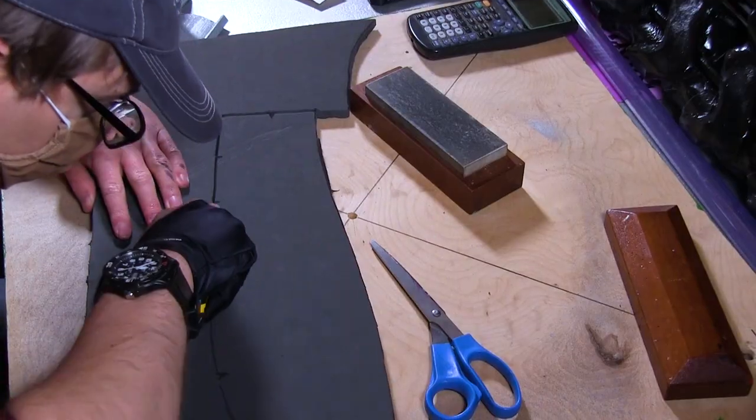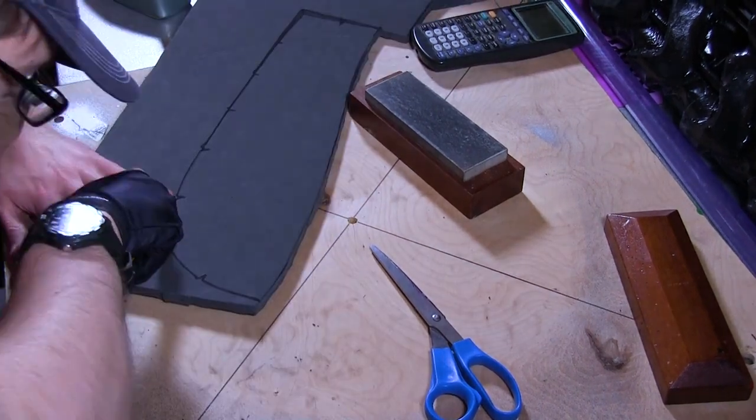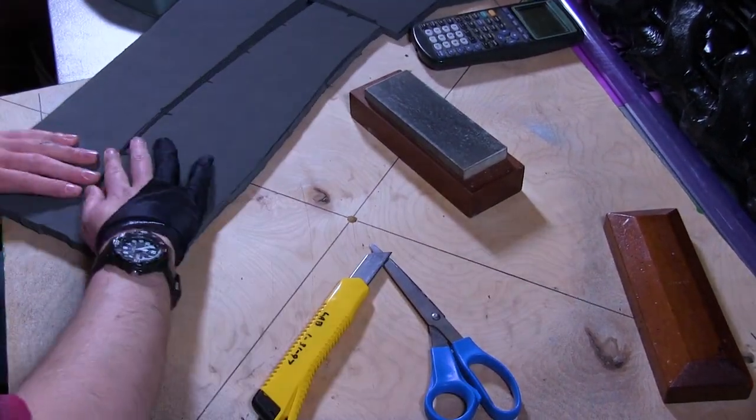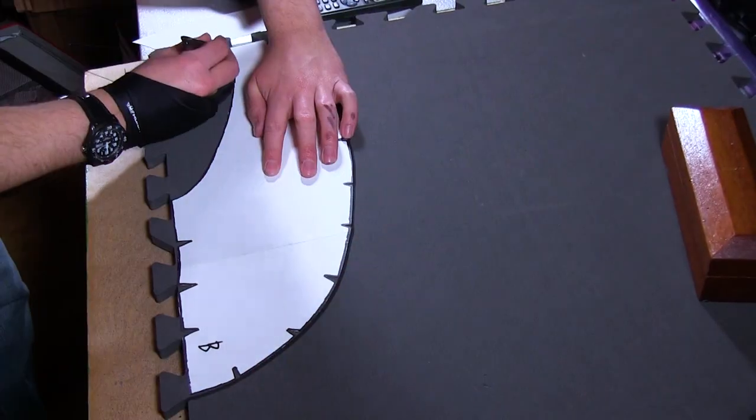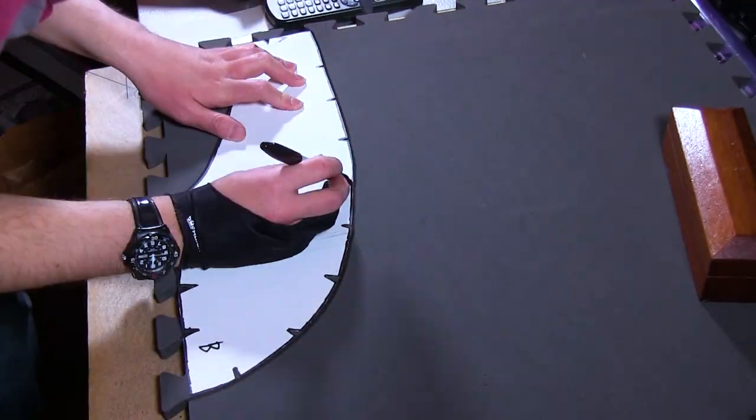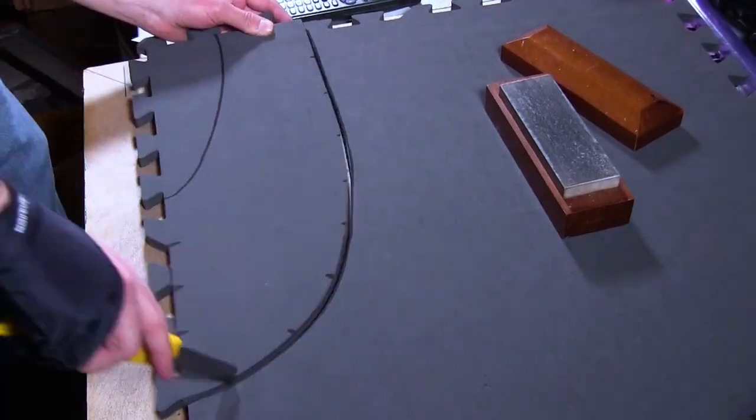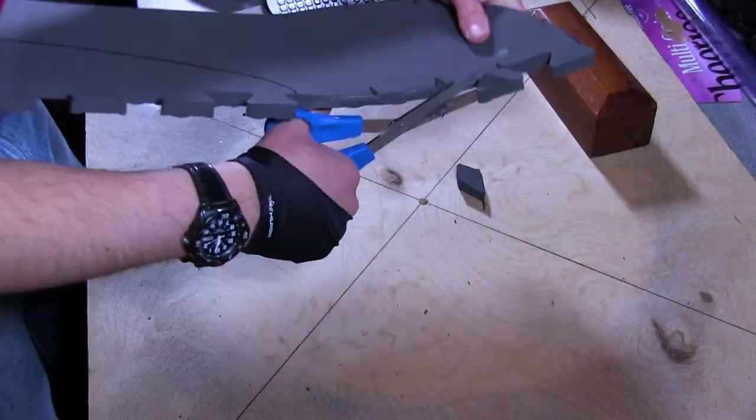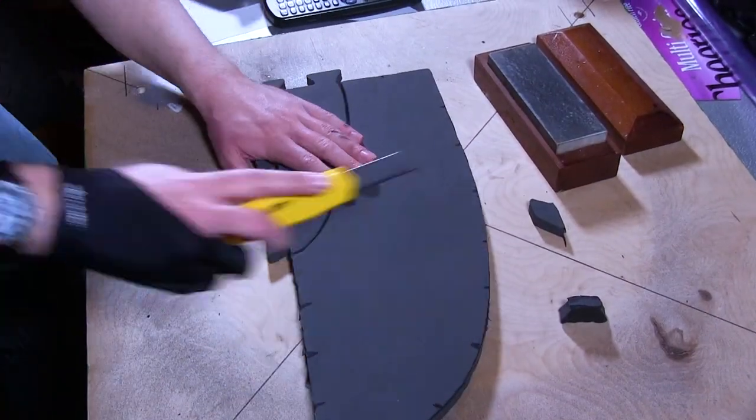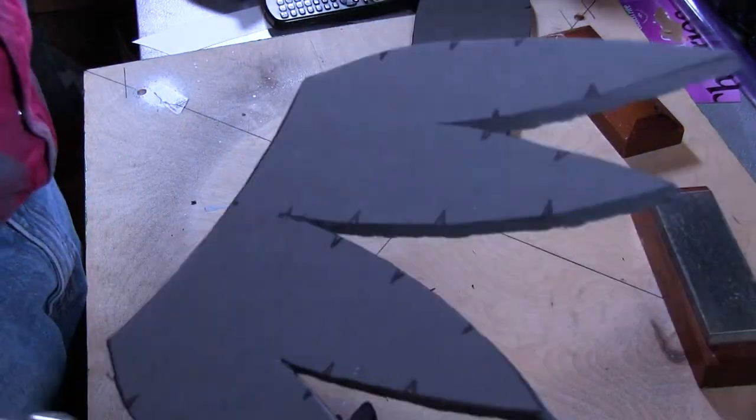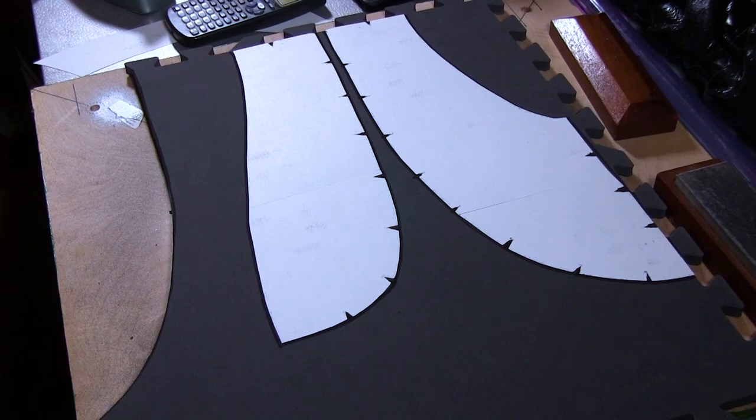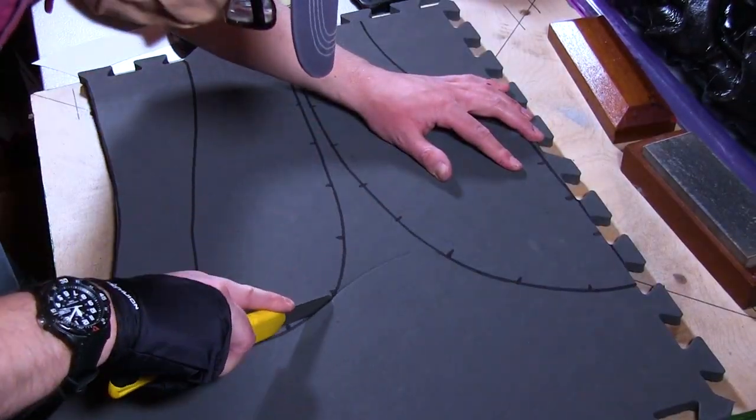I should probably mention that you can buy EVA foam in these quarter inch thick rolls, which is technically big enough in terms of surface area, but I'm not crazy about it. I think that it's so thin, the diamond pattern on the back is always going to show through. So I'm only mentioning it to tell you not to buy it. I've used it once, and I'm never looking back.